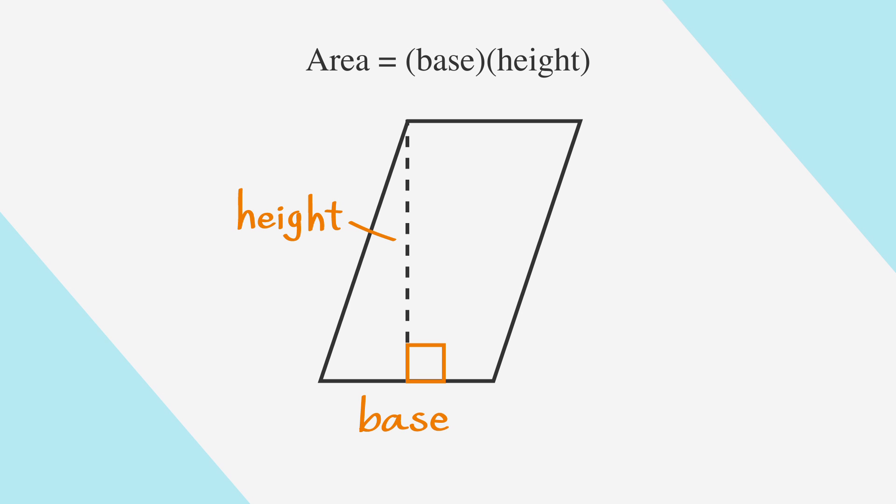In this instance, the base is 2 and the height is 3. So we can just plug those into the area equation, area equals base times height. In this case, area equals 2 times 3, which comes to 6.